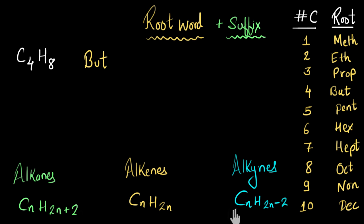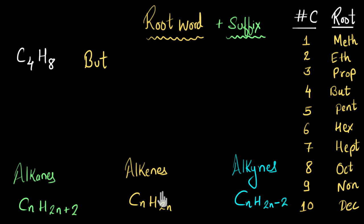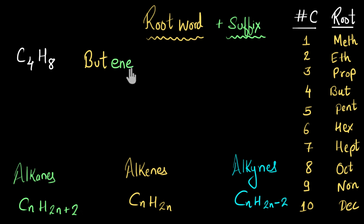Using these general formulas, for C₄H₈, the number of hydrogen atoms — 8 — is exactly twice the number of carbon atoms, and that only happens in the case of alkenes. So this belongs to the alkene family, and the suffix used is '-ene', making the name 'butene'.